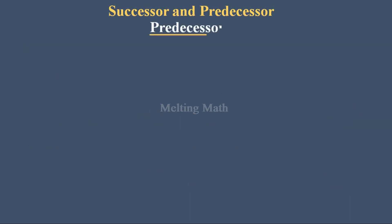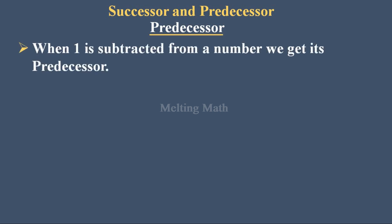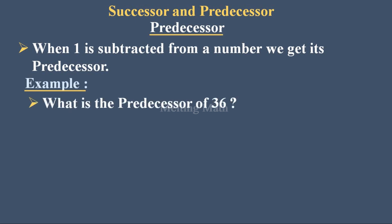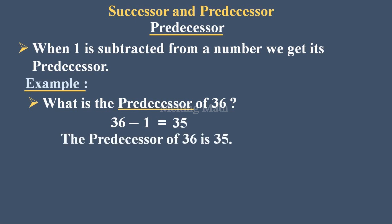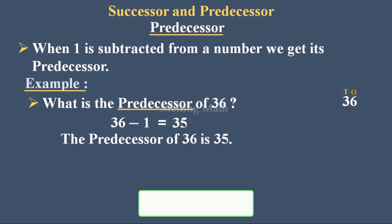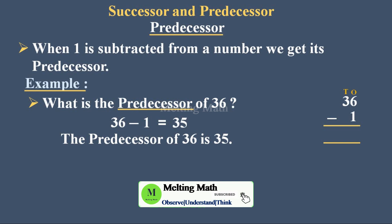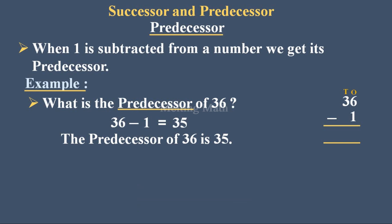Predecessor: when 1 is subtracted from a number we get its predecessor. Example: what is the predecessor of 36? Predecessor means we subtract 1 from the given number. 36 minus 1 equals 35, so the predecessor of 36 is 35. In column subtraction: 6 in ones, 3 in tens; subtract 1 in ones — 6 minus 1 is 5; 3 with nothing below stays as 3. So we get 35.